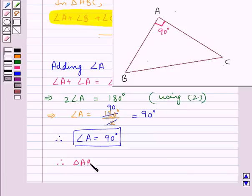This means that triangle ABC is a right triangle.